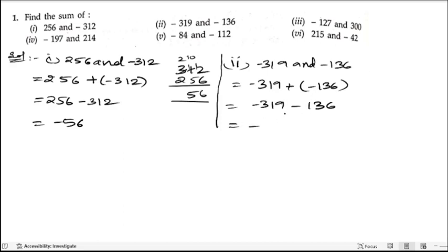So 319 plus 136. 6 plus 9 is 15, 3 plus 1 is 4, 4 plus 1 is 5, 3 plus 1 is 4. So the answer is minus 455.